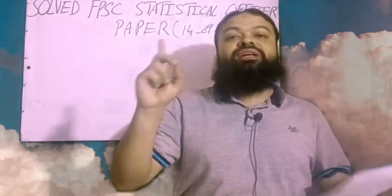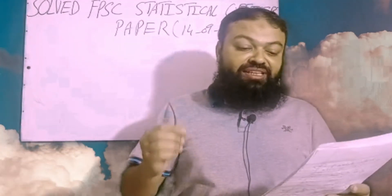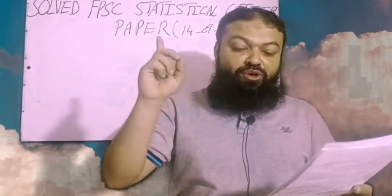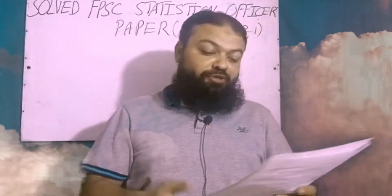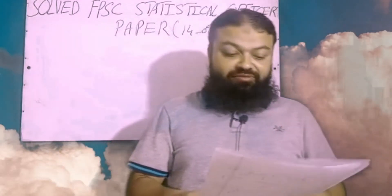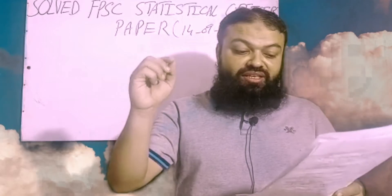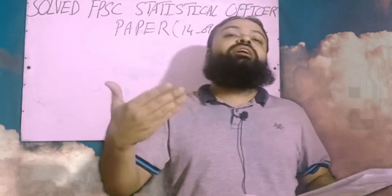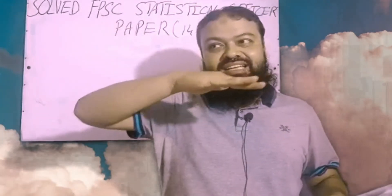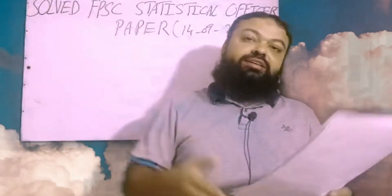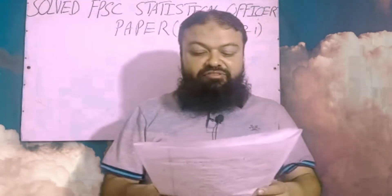Question number three: the word 'movement' referring to time series — the correct option is components. Question number four: time series data is called periodic data — periodic data is the correct option. Question number five: data arranged according to some definite order is ordinal data. For example, shirt sizes: small, medium, large, extra-large — when data is arranged in a definite order, that is called ordinal data.